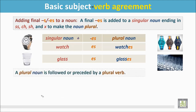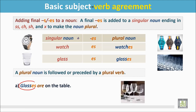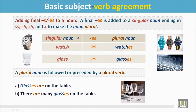A plural noun is followed or preceded by a plural verb. Glasses are on the table — this is a plural noun followed by a plural verb, 'are.' We can also say: there are many glasses on the table, where the plural noun is preceded by a plural verb, 'are.'